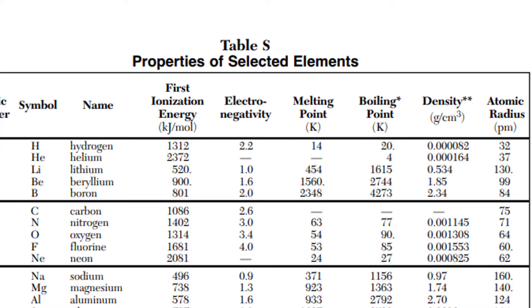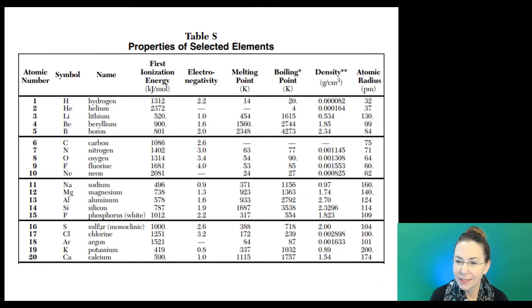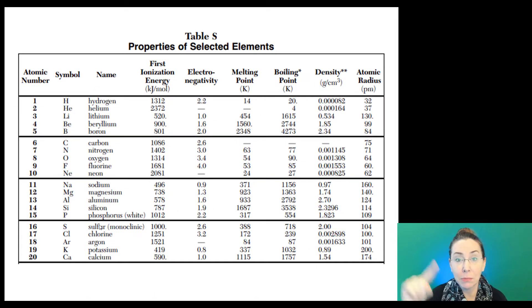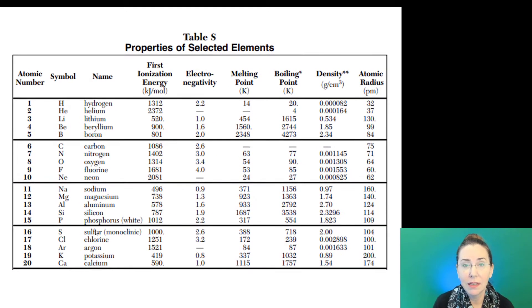But remember, it's down in period two, so now we have two orbitals or two shells containing electrons. However, look at beryllium, element number four. If we're looking at beryllium, what happens to the atomic radius? Is it larger or smaller than that of lithium?